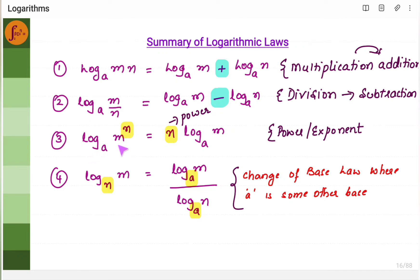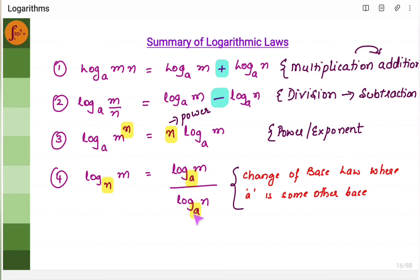The third law is log of m to the power n — if you have a power, then it is going to be n into log m. The fourth law is the change of base law. If you have log m to the base n, then we can write it as log m to the base a divided by log n to the base a.